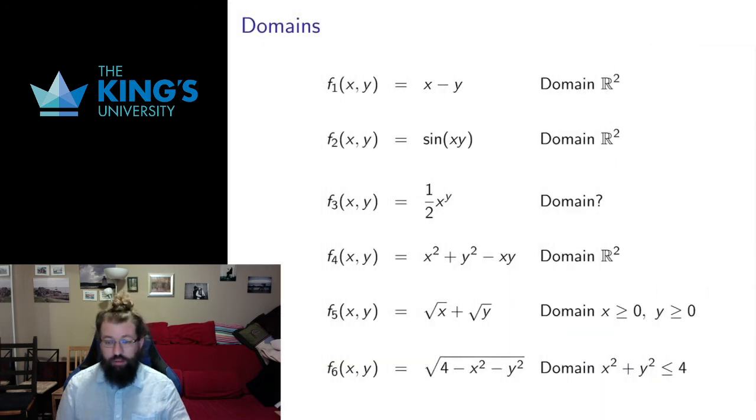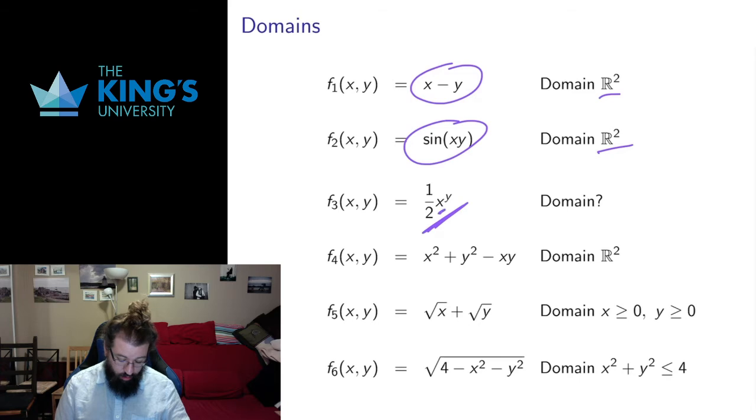And then we can ask domain questions and domain questions look very much like they did before. We have to say for what values of both of the inputs is this thing valid? Well there's no problems here, the domain's all of R². Sine can be evaluated everywhere, the domain's all of R². This is really weird because this depends on what this base is.